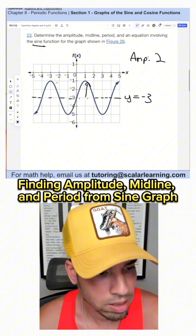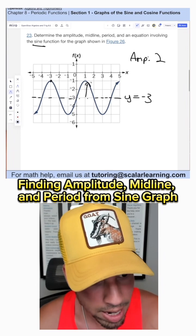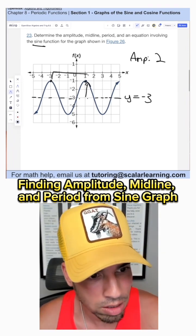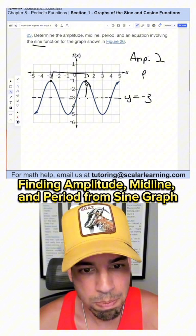And then the period is how long it takes to cycle, to repeat. So here's the max, here's the max. How long does it take to cycle from max to max? It looks like a distance of four. So the period is four.